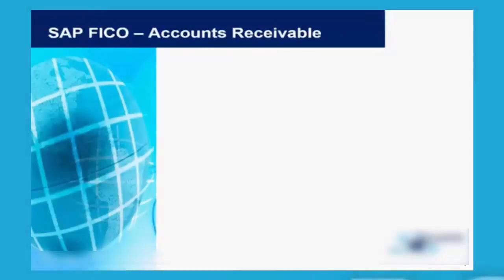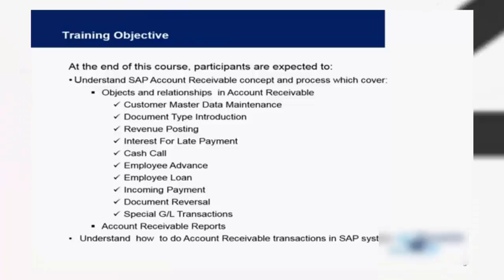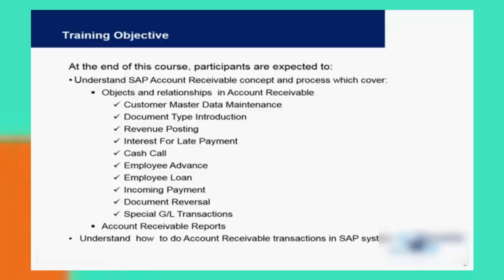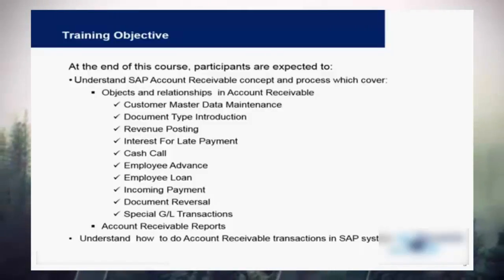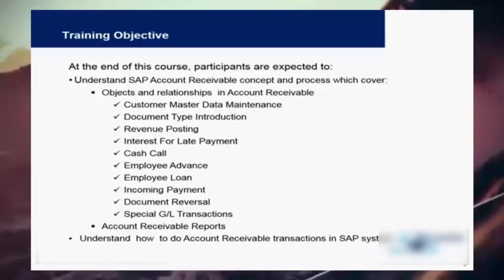In previous videos we covered general ledger, accounts payable, and all the basics of finance and accounting. We also covered in SAP FICO the demo of accounts payable, including vendor master and vendor transactions. We will now take the next topic: accounts receivable. In this training we will look at objects and relationships in accounts receivable, customer master data, document types, revenue posting, interest for late payments, employee loans and advances, incoming payments, document reversals, special GL transactions, and accounts receivable reports.